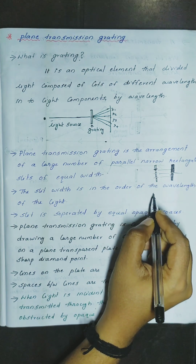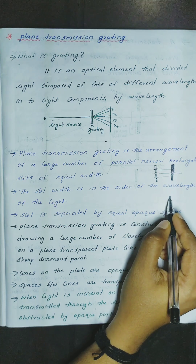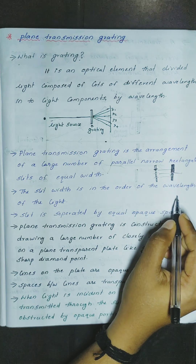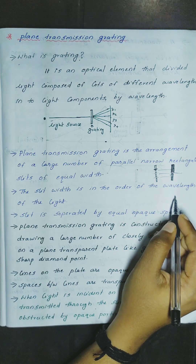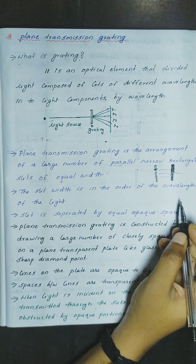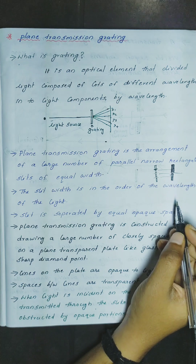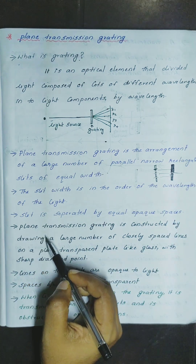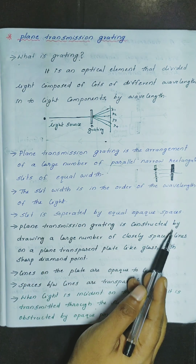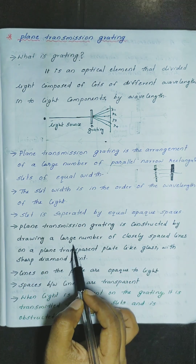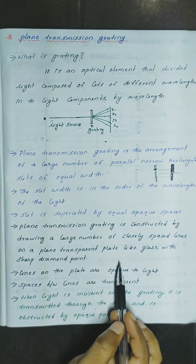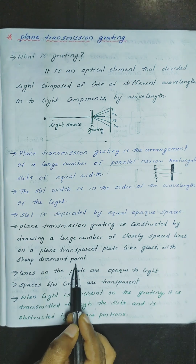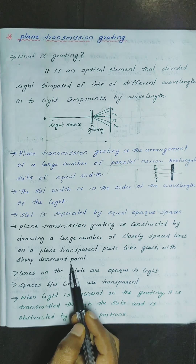It is an opaque region, it is a transparent region, it is an opaque region. The grating is made by drawing a large number of closely spaced lines on a plain transparent plate like glass with a sharp diamond point.